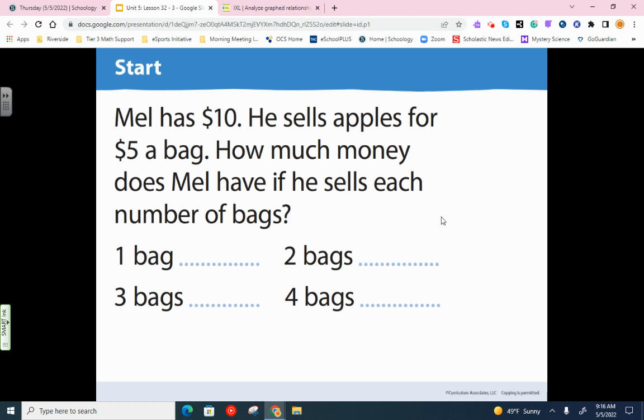So Mel has $10. He sells apples for $5 a bag. How much money does Mel have if he sells each number of bags? So this is like a real-life problem where just picture yourself having $10, and then you have these things to sell. So you want to keep a running count of how much money you have when you're done selling everything. So you start with $10, and then if you sell each bag for $5 a bag, if you sell one bag, you have $15. And then if you sell two bags, that means you add another $5 on there. If you sell three bags, that means you've got $25. And then if you sell the fourth bag, that means you're going to end up with $30.